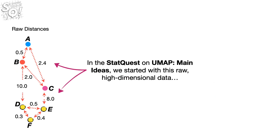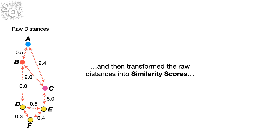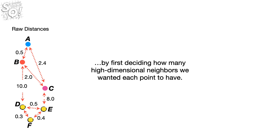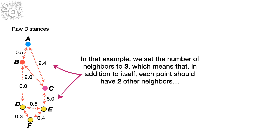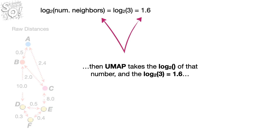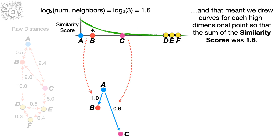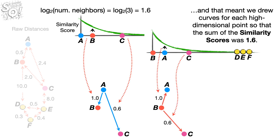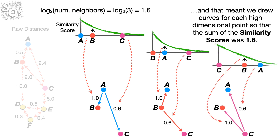In the StatQuest on UMAP Main Ideas, we started with raw high-dimensional data and then transformed the raw distances into similarity scores by first deciding how many high-dimensional neighbors we wanted each point to have. In that example, we set the number of neighbors to 3, which means that, in addition to itself, each point should have two other neighbors. Then UMAP takes the log base 2 of that number, and the log base 2 of 3 is 1.6. And that meant we drew curves for each high-dimensional point so that the sum of the similarity scores was 1.6.